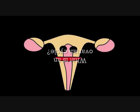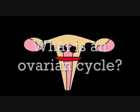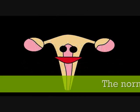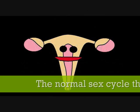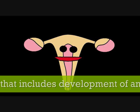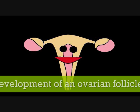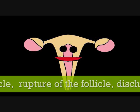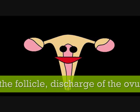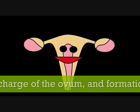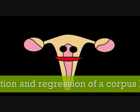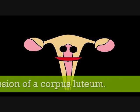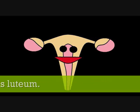But first, what is the ovarian cycle? The ovarian cycle is the normal sex cycle that includes development of an ovarian follicle, rupture of the follicle, discharge of the ovum, and formation and regression of a corpus luteum. So, let us go now to the cycle.